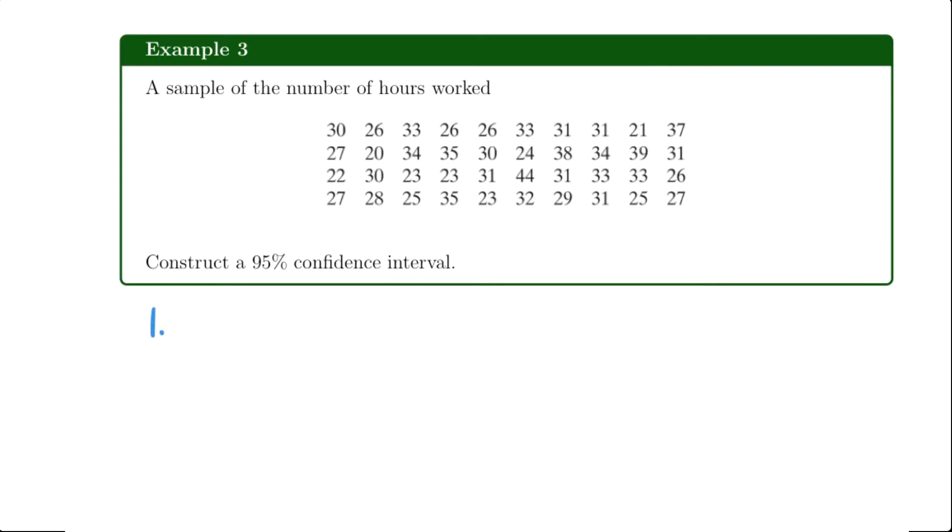So the first thing we have to do is know is the population standard deviation known. And in the example shown right now it is not known, so I'm going to have to tell it to you. And most textbooks when you're doing the homework in a section like this will have to give you the population standard deviation. Otherwise you're going to use a different technique in a different section.